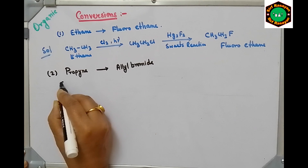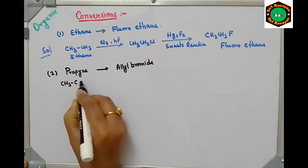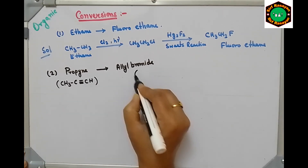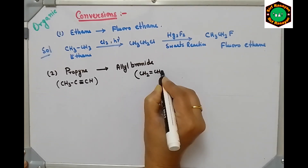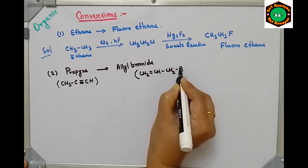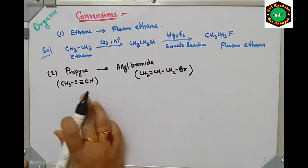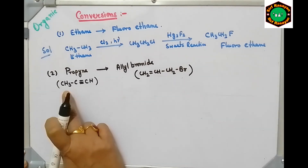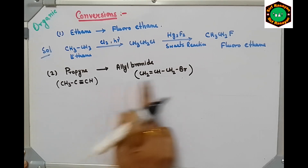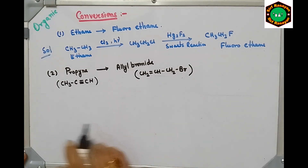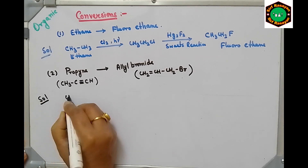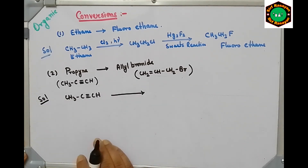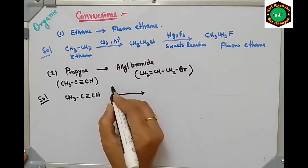Next conversion is propyne to allyl bromide. The structure of propyne is CH3-C≡CH, and allyl bromide is CH2=CH-CH2Br. In the product, reduction of the triple bond is there, and at the allylic position after reduction, bromination has to be done. So take propyne and first reduce the triple bond to get a double bond.